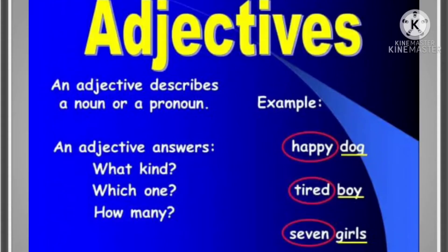One more thing to remember: an adjective normally indicates quality, size, shape, duration, feelings, contents, and more about a noun or pronoun. They provide relevant information about the nouns and pronouns — 'they' referring to adjectives.